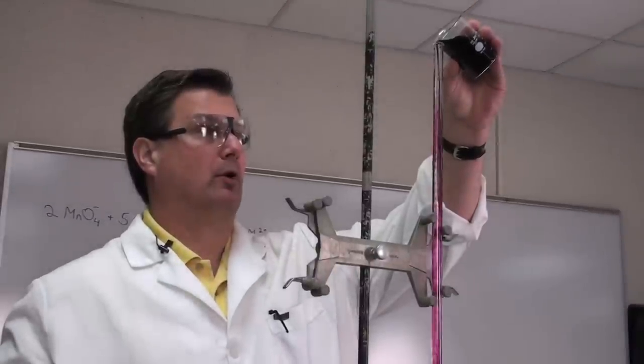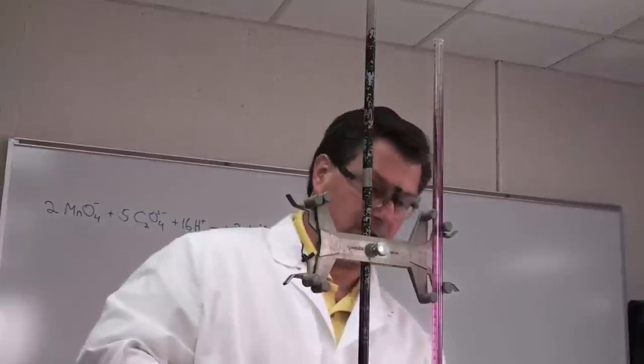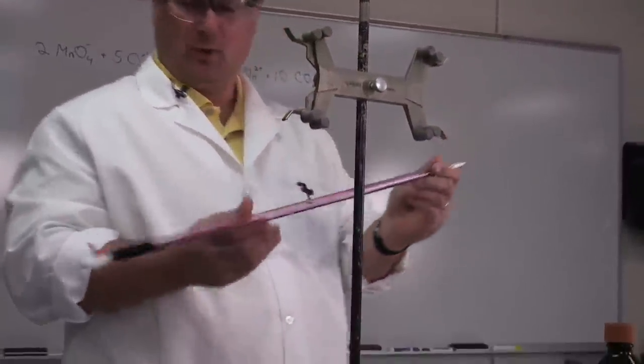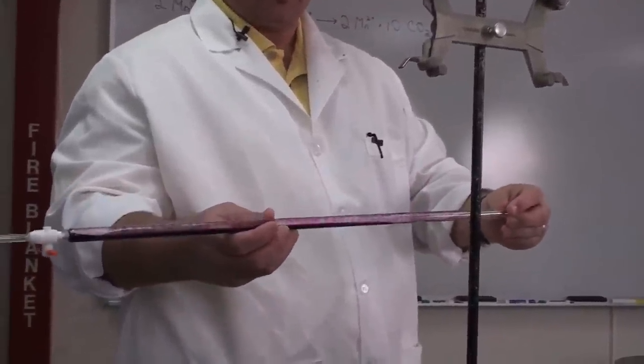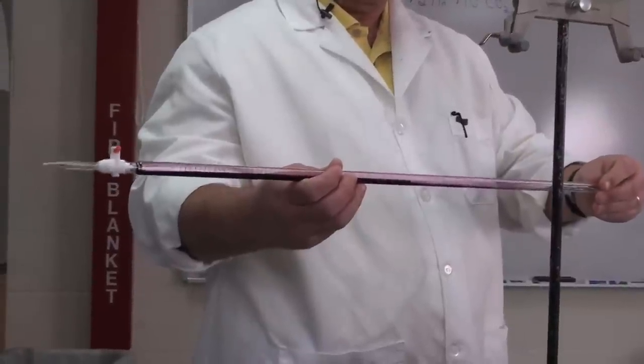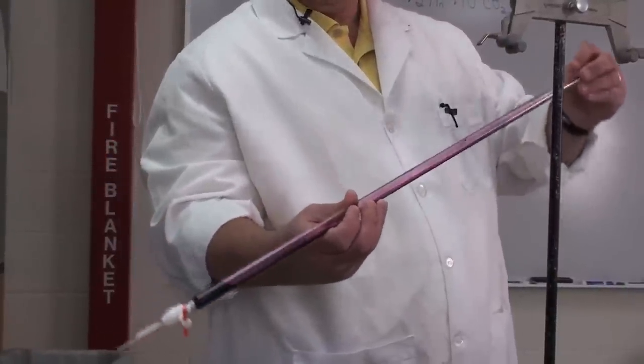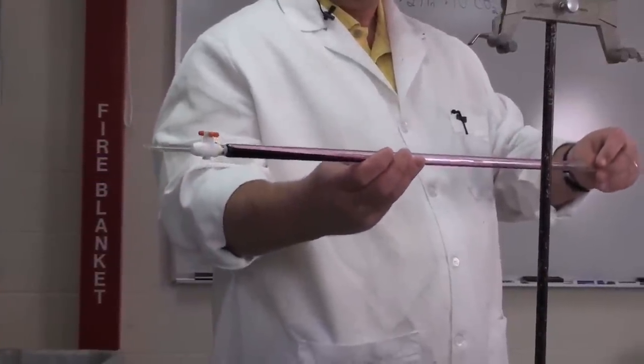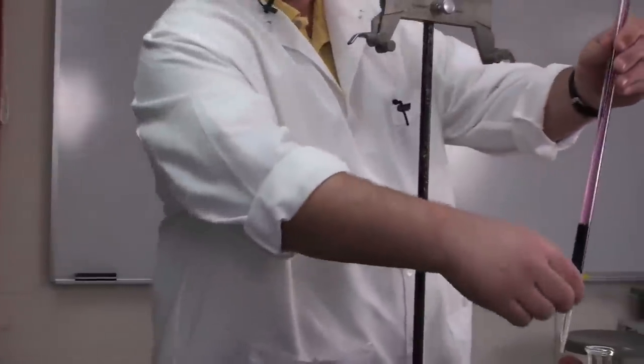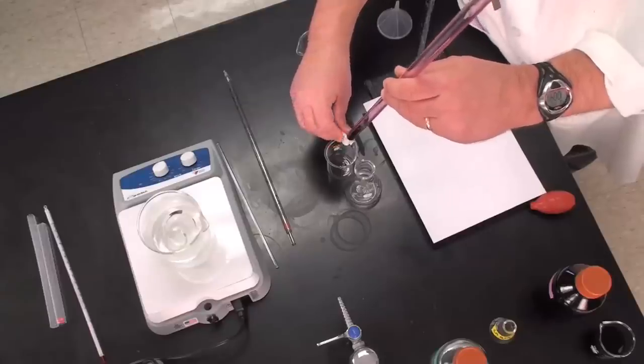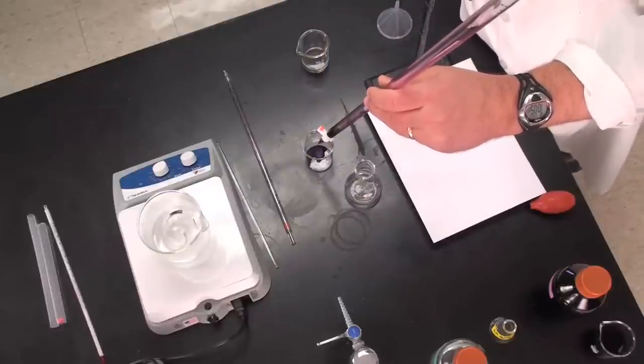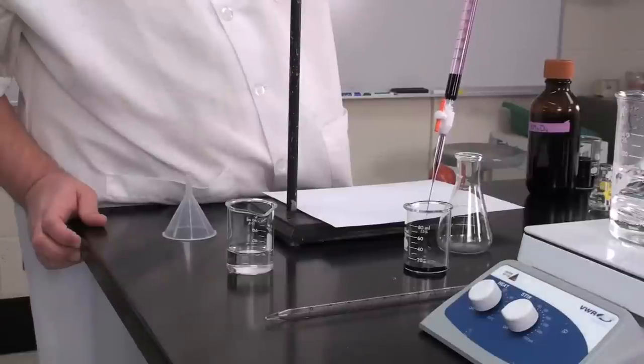I'm going to pour a few milliliters in there, not very much. The purpose is just to rinse dust or anything that might be in there out. You tilt it almost horizontally and spin it around, coat the inside of the burette with the reagent, which we call the titrant. Then we get rid of it—this is going to be discarded into this other beaker through the stopcock.